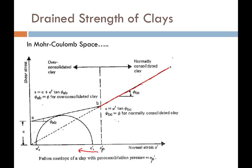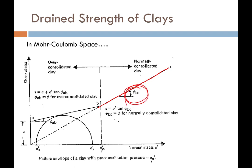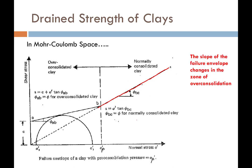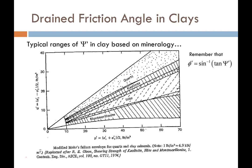So to say that all cohesion is false is not true. There is cohesion, but it's typically associated with over-consolidated soils. For over-consolidated clays we will see cohesion, but right at the pre-consolidation stress the failure envelope changes to the drained friction angle of that soil. The slope of the Mohr-Coulomb failure envelope changes in the zone of over-consolidation such that we now have apparent cohesion in the soil.